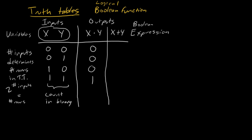For x OR y: the notation I'm using is plus for OR. I don't read it as x plus y — I read it as x OR y. As long as either input is true, I write a one; otherwise zero. So zero OR zero is false — zero. Zero OR one is one. One OR zero is one. And one OR one is one. That's how I figure out the output.